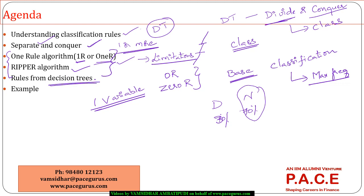There is also a way to generate rules from the decision trees themselves. If I generate rules from decision trees, there are advantages and disadvantages. Once we have a basic conceptual understanding of all these aspects, we will take up a dataset and execute this whole process.